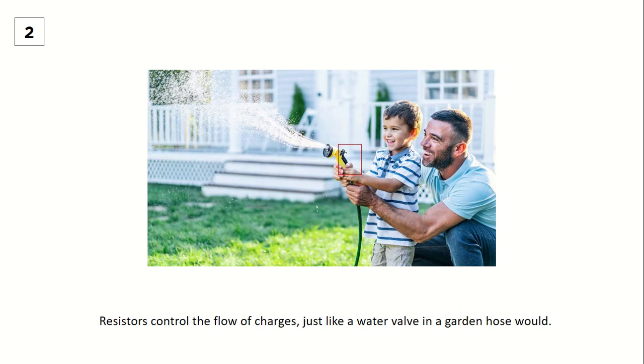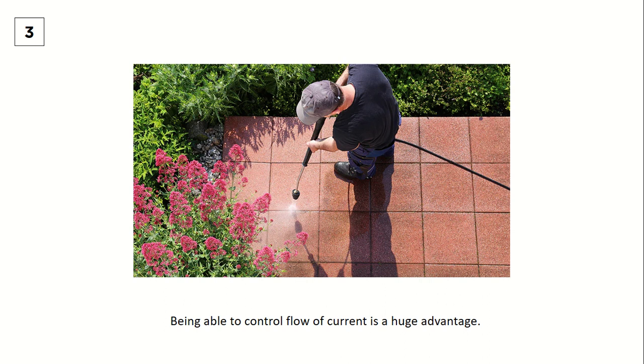We can compare a resistor to a water valve in a garden hose. The water valve allows you to have precise control of the water pressure coming out of the hose. A relatively low pressure is useful when one is trying to water the plants, but a relatively high pressure is needed if you want to remove dirt clinging on your walls or pavement. Being able to control water pressure allows you to use the water hose in a variety of ways.